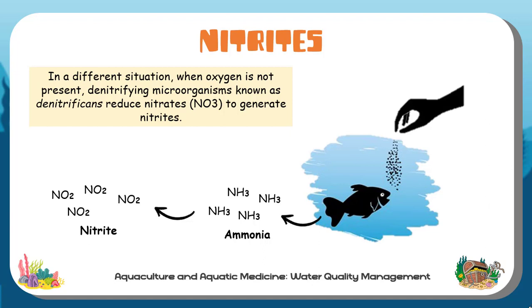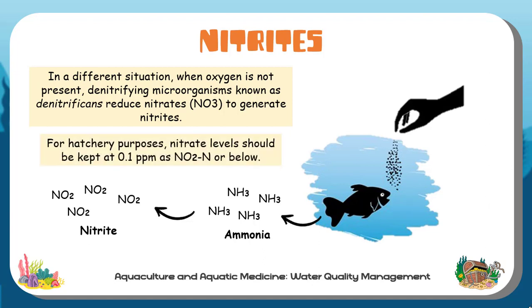Waters may include nitrates, which are normally present in low amounts because nitrites are easily converted to nitrates. For hatchery purposes, nitrite levels should be kept at 0.1 ppm as nitrite nitrogen or below.